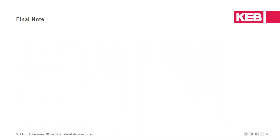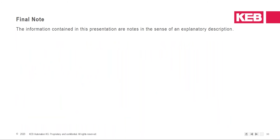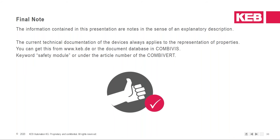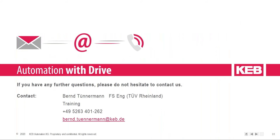A final note: since we are speaking about safety, the information contained in this presentation are notes in the sense of an explanatory description. The current technical documentation of the drive always applies as the authoritative reference. When you want to get the manual for the drive, you can visit the KEB homepage or the document database in CombiViz — KEB's software program — using the keyword 'safety module' or the article number of the Combivert.